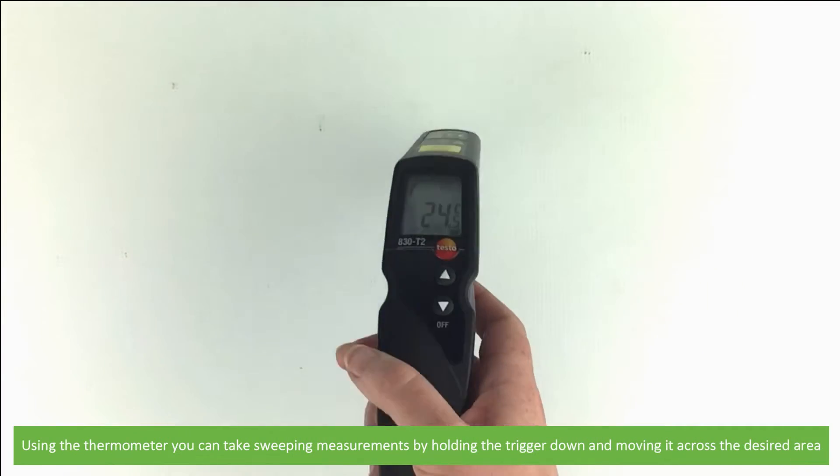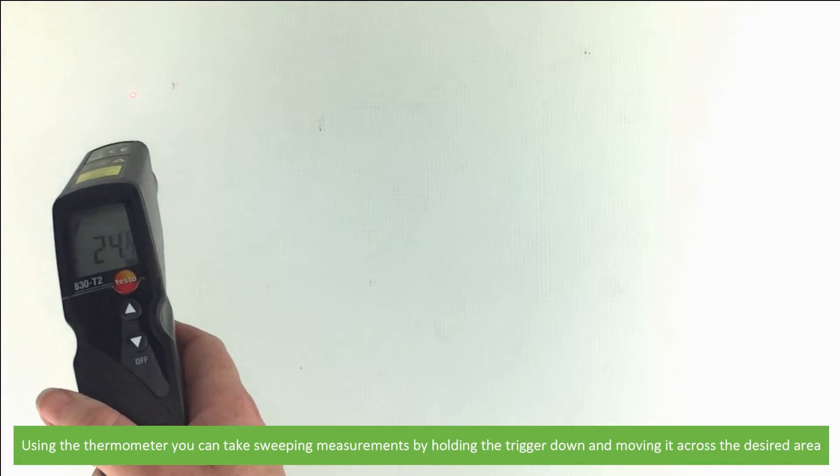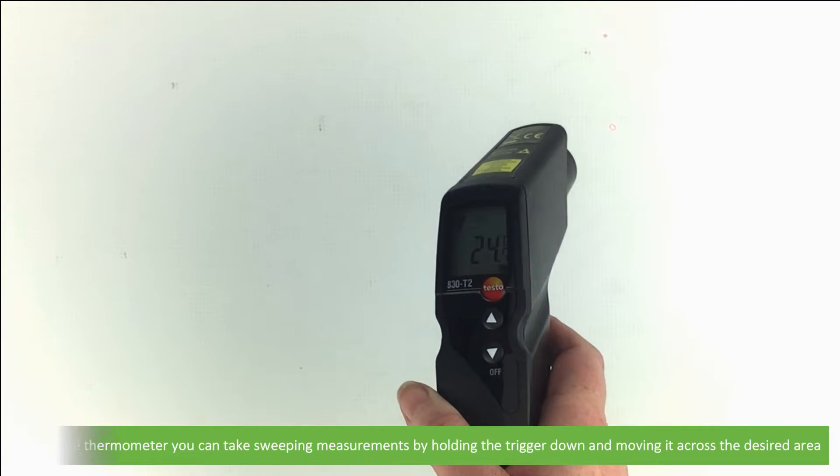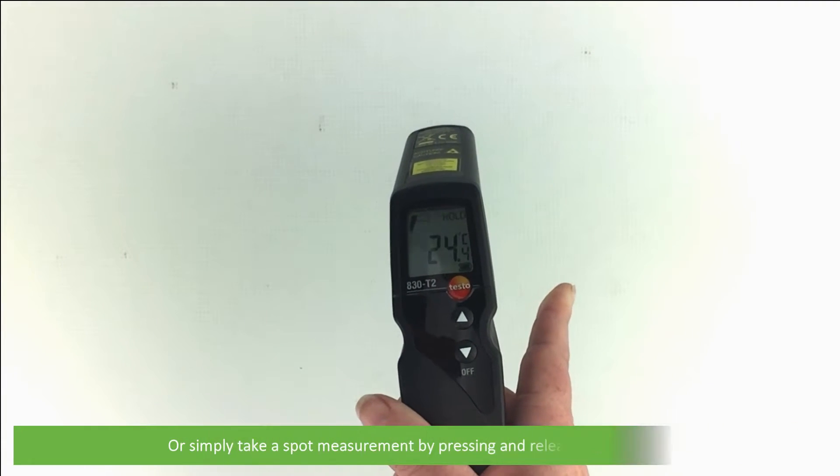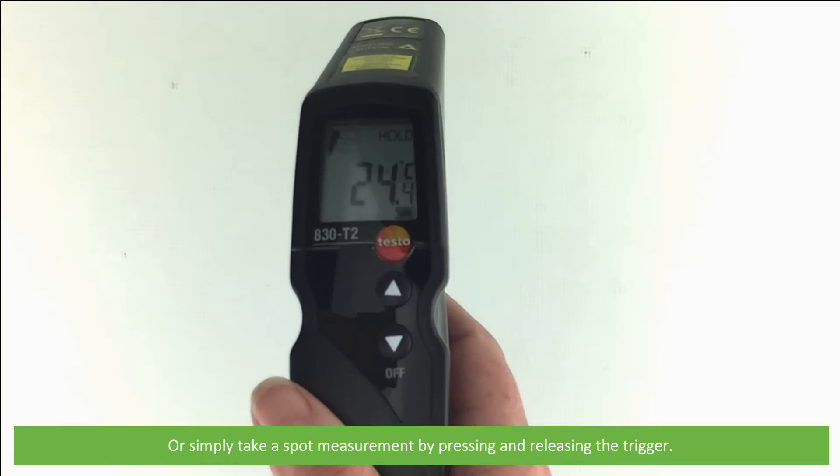Using the thermometer, you can take sweeping measurements by holding the trigger down and moving it across a desired area. Or simply take a spot measurement by pressing and releasing the trigger.